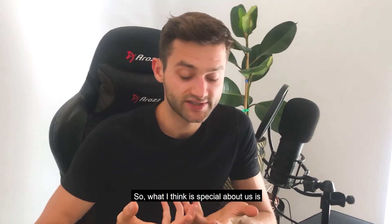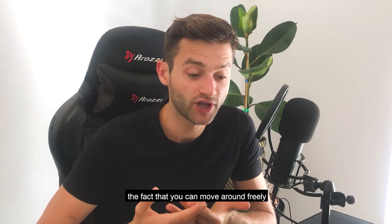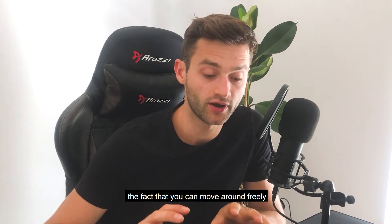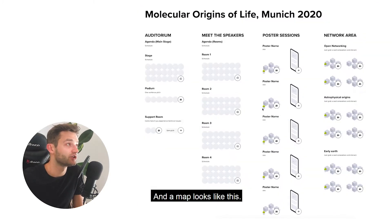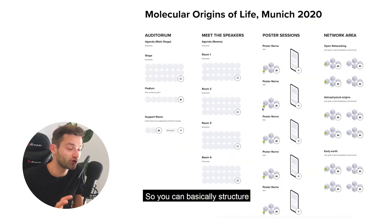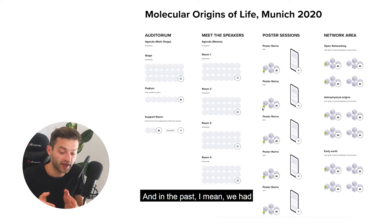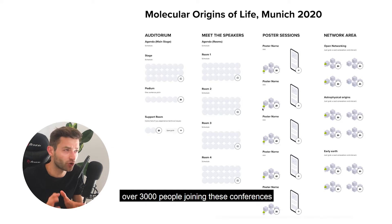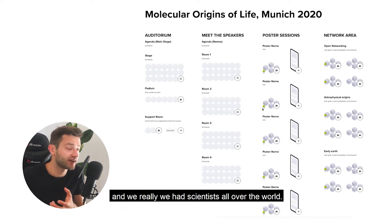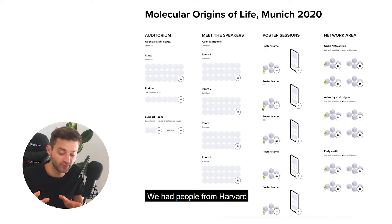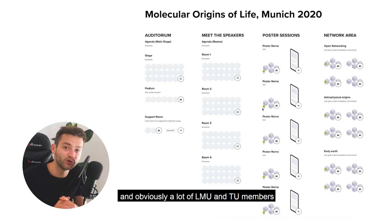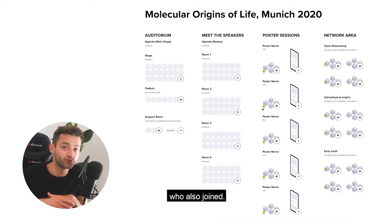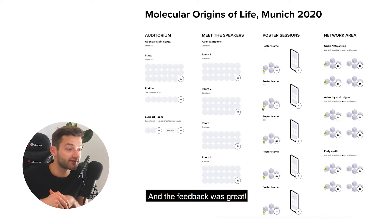What I think is special about us is the fact that you can move around freely on a 2D map. And a map looks like this. You can basically structure your digital location as an organizer any way you want. In the past we had over 3000 people joining these conferences and we really had scientists all over the world. We had people from Harvard, MIT, and Stanford and obviously a lot of LMU and TU members who also joined.